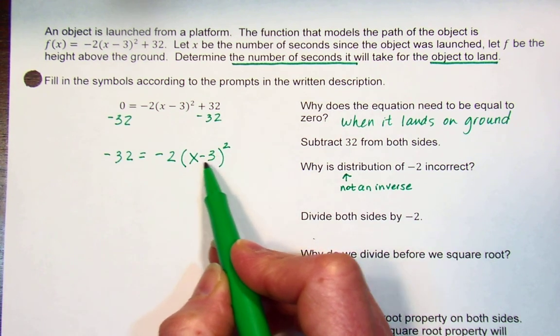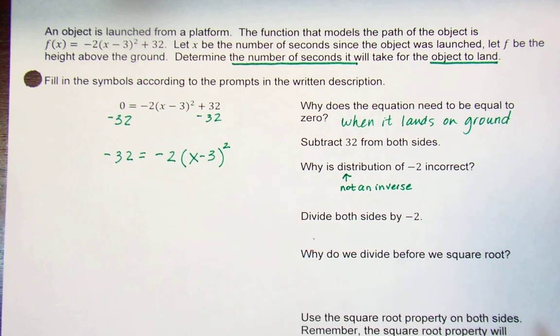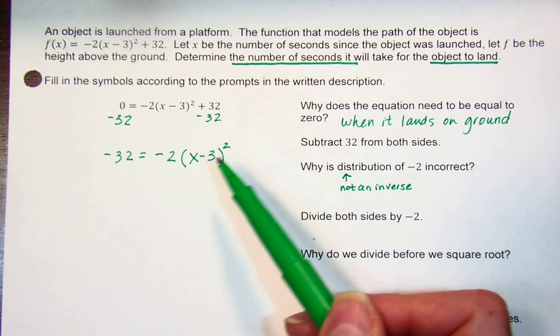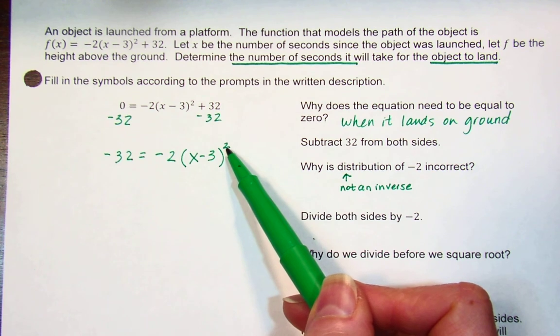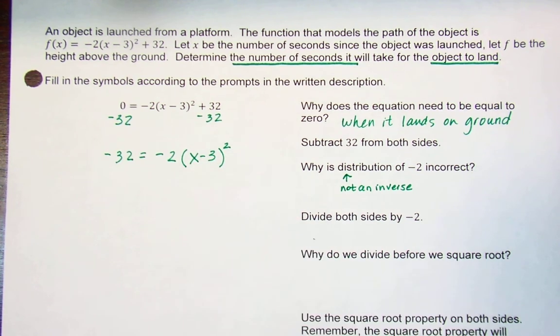Moreover, I would have to apply the exponent first, and I would have to do (x - 3) times (x - 3). Remember, there's no such thing as distribution of an exponent either. We're solving by inverses. What would be the inverse of what we see here?